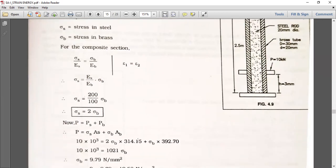Now, for the composite section, sigma S upon Es equals sigma B upon Eb, because we can consider epsilon 1 equals epsilon 2. Now sigma S equals Es upon Eb times sigma B. Putting the values of each component, we can get sigma S equals 2 times sigma B.